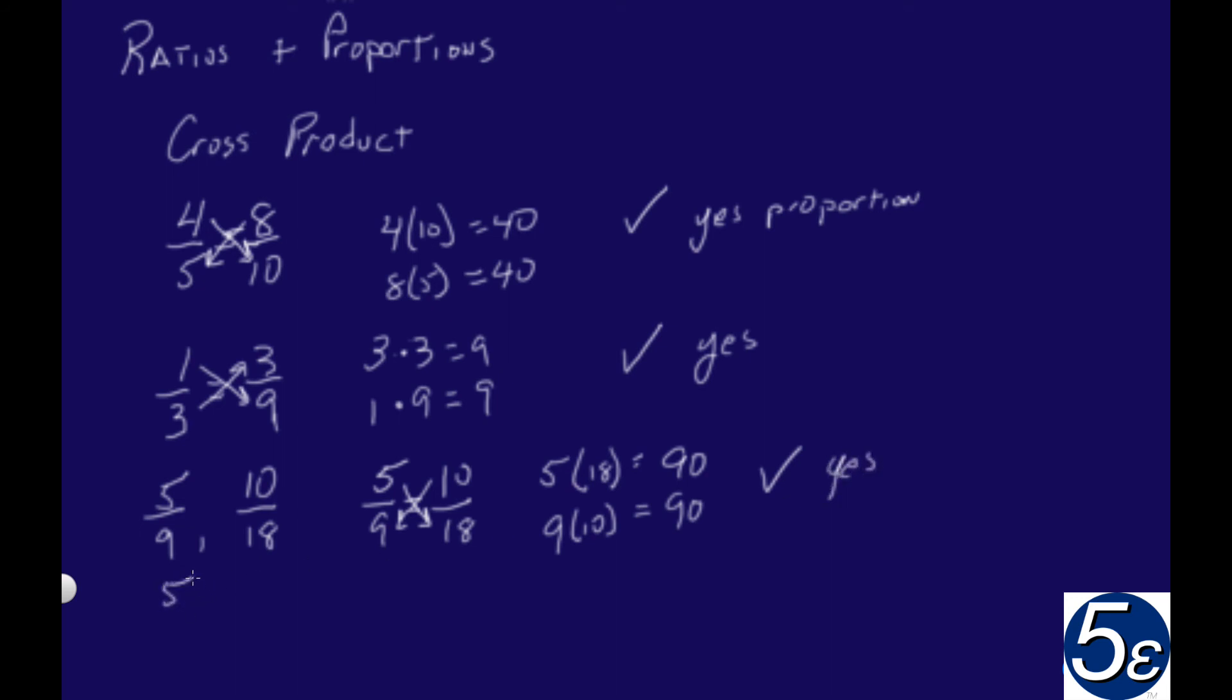So we'll choose one more, and we'll use the same 5 ninths, but this time we'll put on this side 1 third. So we'll try that again. We'll do 5 ninths equals 1 third, and we'll see if our cross product holds.